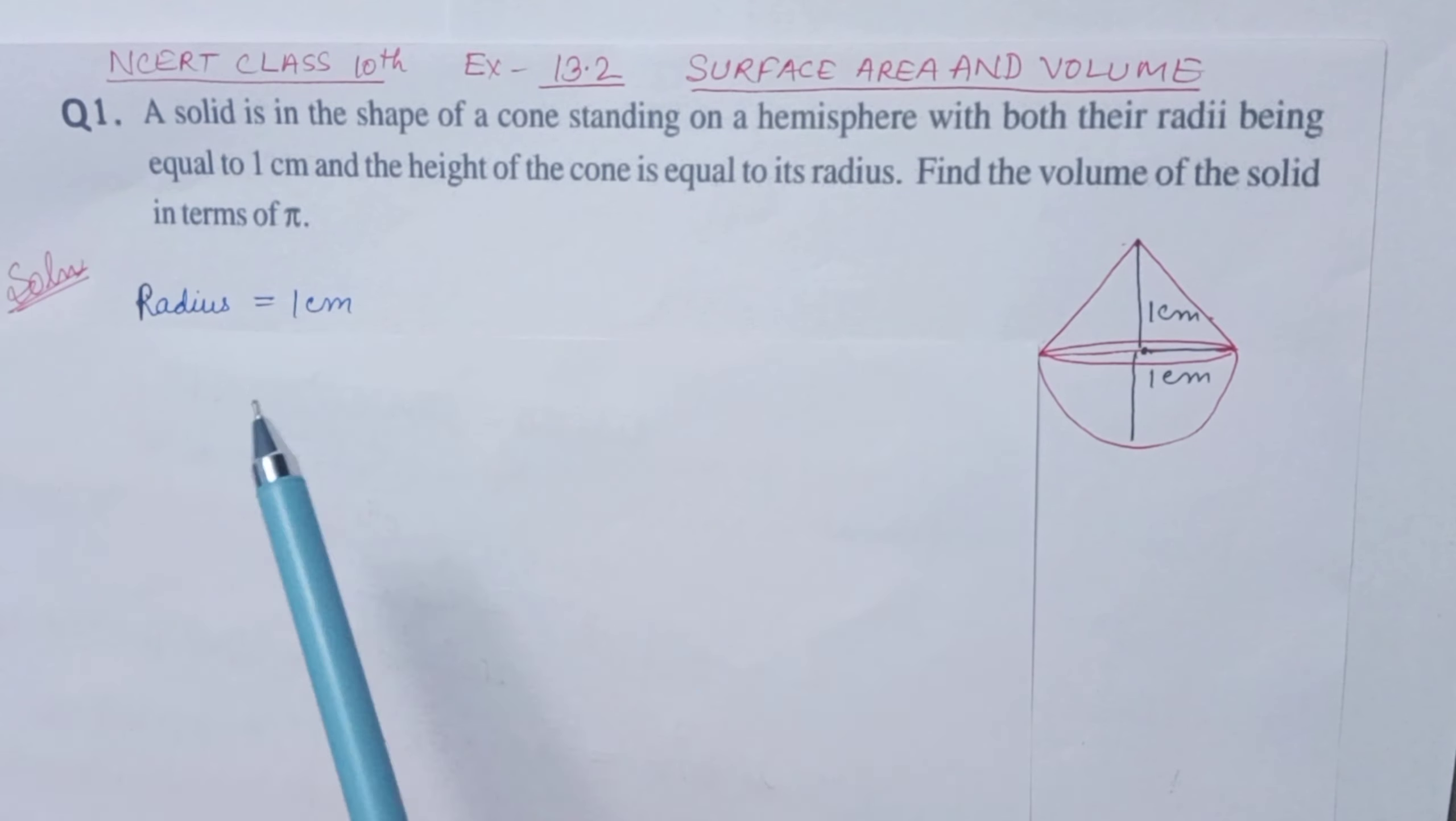First, let's write what is given. The radius is 1 cm and the height of the cone is 1 cm.